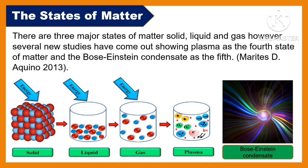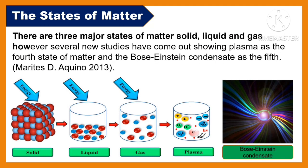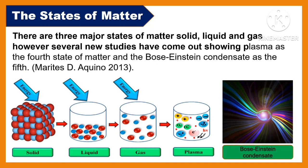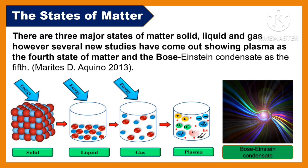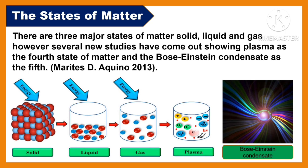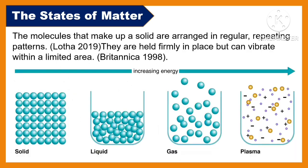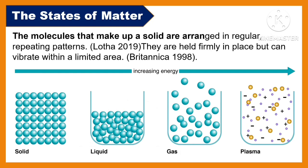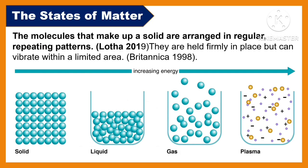There are three major states of matter: solid, liquid, and gas. However, several new studies have come out showing plasma as the fourth state of matter and the Bose-Einstein condensate as the fifth. The molecules that make up a solid are arranged in regular repeating patterns.